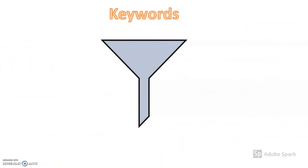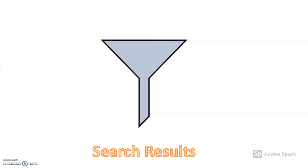One way to think about research is in terms of input and output. You input keywords into a database or search engine in order to find relevant search results. Because what you put into a search impacts what you get out, keywords matter.